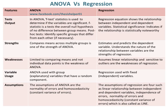ANOVA is used with group explanatory variables that have a random component. Whereas, regression is used with fixed independent variables. The assumptions of ANOVA are normality of errors and homoscedasticity, meaning constant variance of errors. Whereas, the assumptions of regression are four: a linear relationship between independent and dependent variables, independence of errors, normality of errors, and homoscedasticity — constant variance of errors, also referred to as LINE.